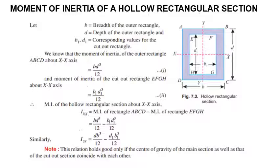Similarly, IYY for the hollow rectangular section is DB cubed by 12 minus D1 B1 cubed by 12. This relationship is valid only if the centroid of the outer rectangle coincides with the centroid of the inner rectangle.